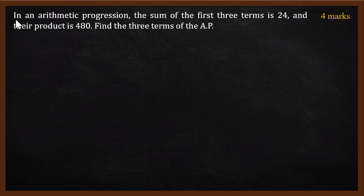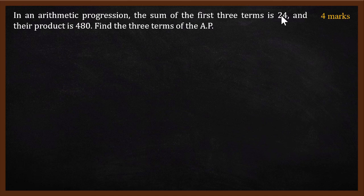Welcome to this video. In this video, we will solve a former Arithmetic Progression question. In an Arithmetic Progression, the sum of the first three terms is 24, and their product is 480.